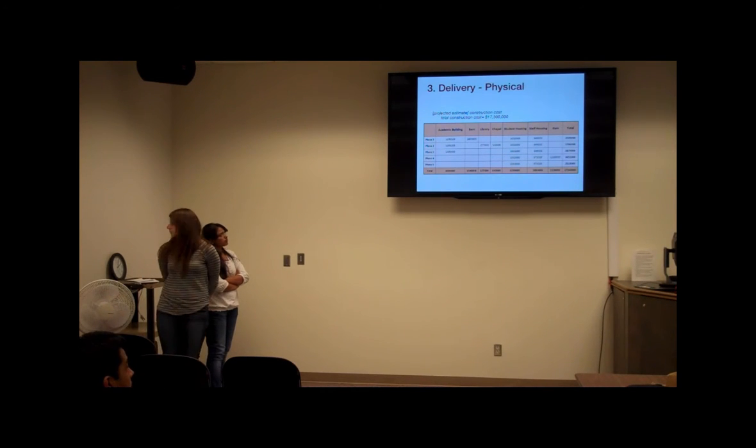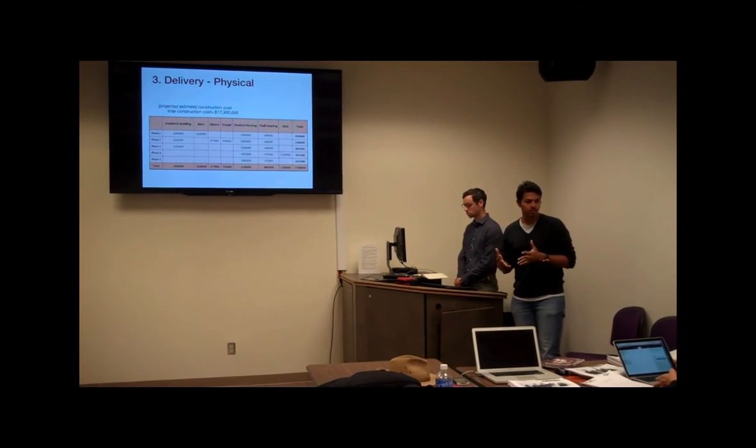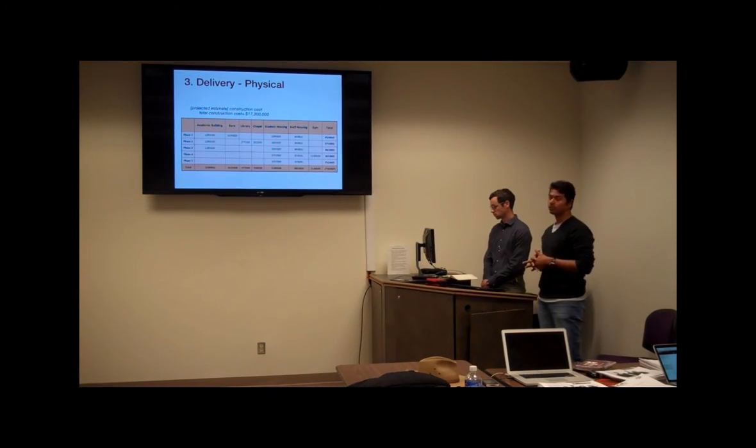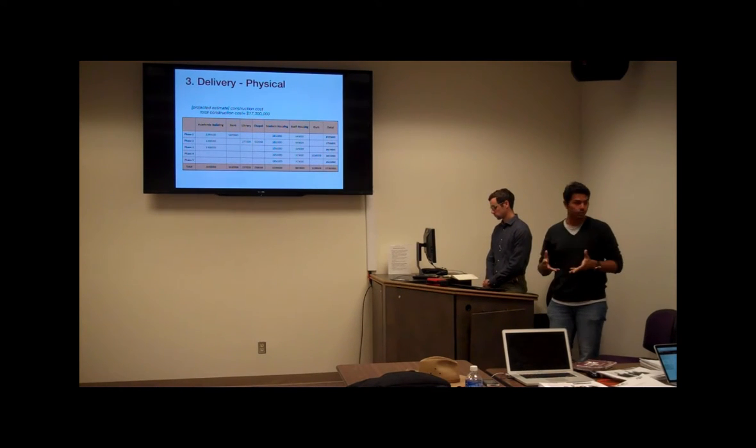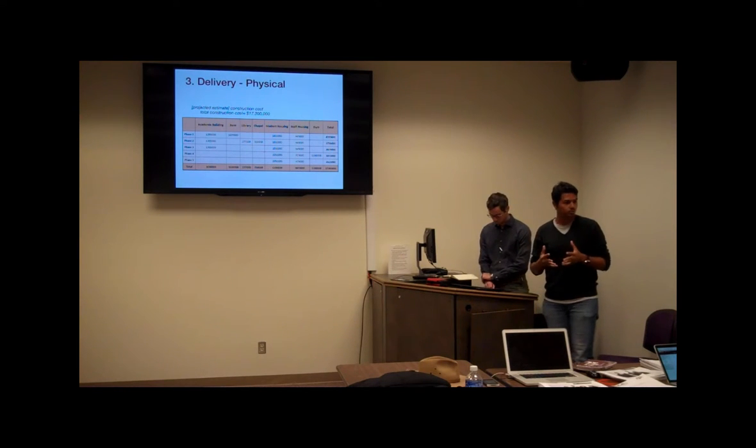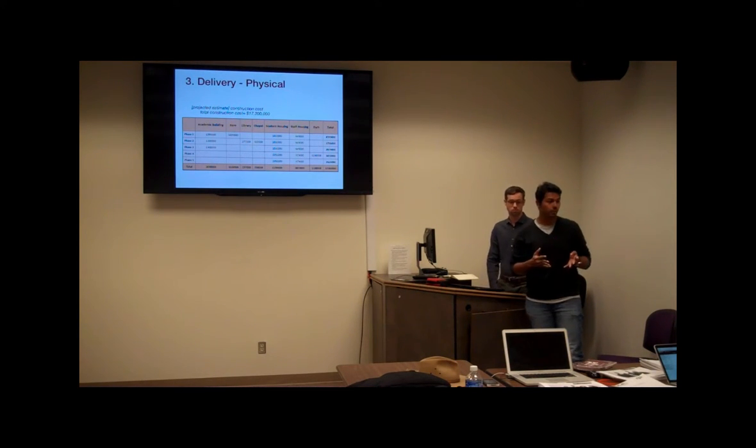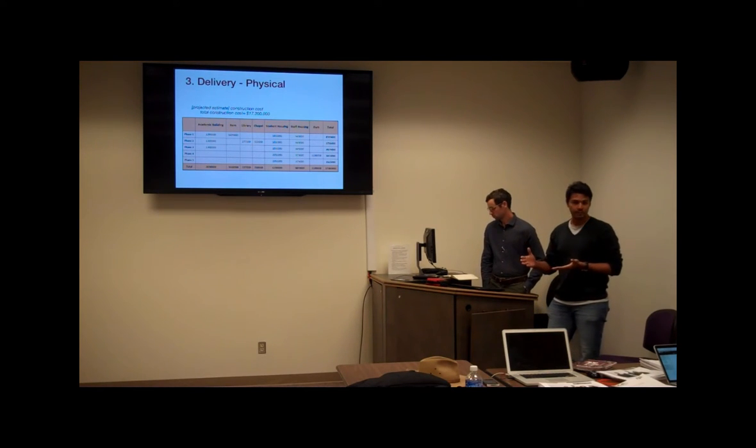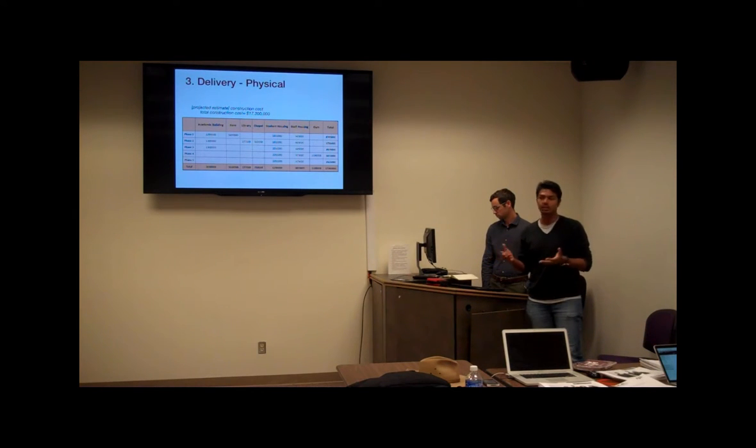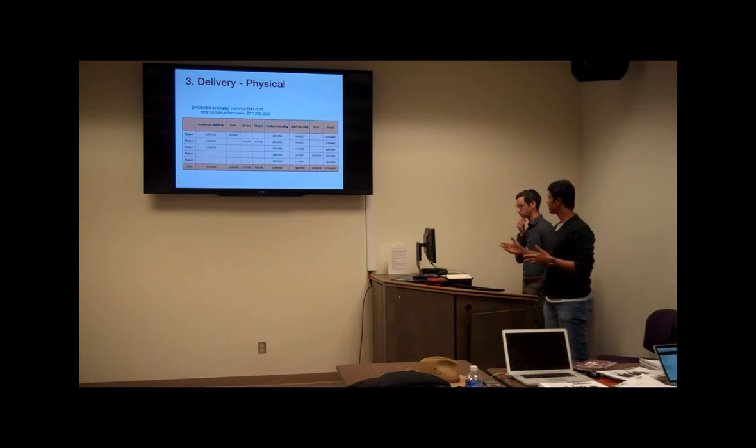Coming to the estimate and construction plan. Our total construction cost is $70.3 million. 25% of the cost is going to be utilized in the first phase. The first phase includes majorly academic building, chapel, barn, student housing, and staff housing. The major part of our expenses is the academic building, which is approximately $4 million. This has been distributed over three phases to make it more economical and feasible for the developer as well as to collect donations for future stages.